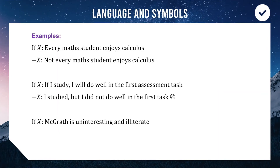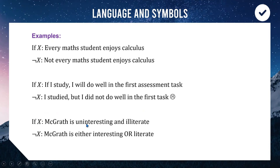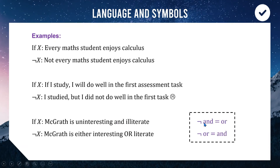For a third example: 'McGrath was uninteresting and illiterate.' To negate that, we only need to show that McGrath is either interesting or literate. The negation of this 'and' statement turns into an 'or.' So the statement 'McGrath is uninteresting and illiterate' has the negation 'McGrath is either interesting or literate.' The key rule here: if you negate an 'and' you turn it into an 'or,' and if you negate an 'or' you turn it into an 'and.'